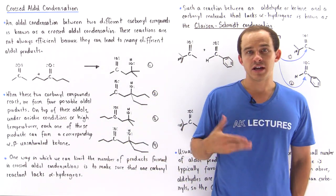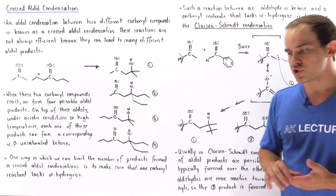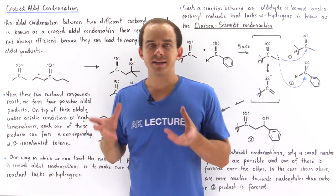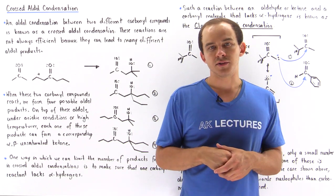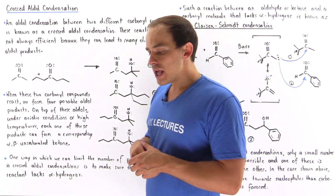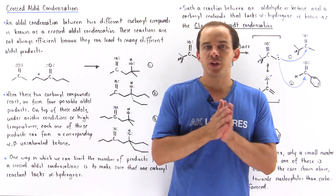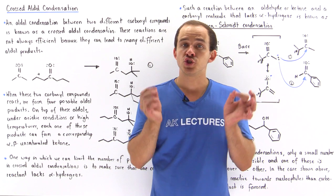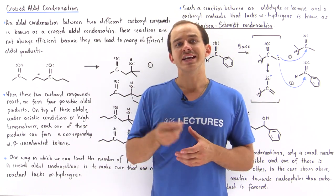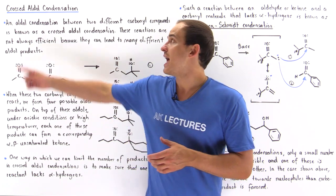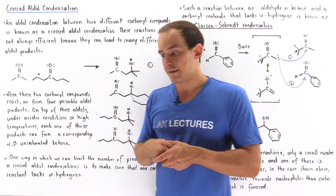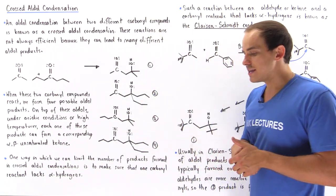So far in our discussion on aldol condensation reactions, we've focused on condensation reactions between the same exact carbonyl compounds. But let's suppose our two carbonyl compounds are now different. Anytime a condensation reaction takes place between two different carbonyl compounds, such an aldol condensation is given a specific name — it is known as a crossed aldol condensation reaction, or more specifically a mixed condensation reaction.